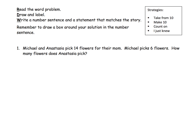The first question says: Michael and Anastasia pick 14 flowers for their mom. Michael picks six flowers. How many flowers does Anastasia pick? The first thing we're going to do is draw a picture — Michael and Anastasia pick 14 flowers for their mom, so let's draw a picture of that.